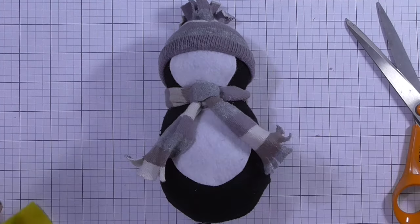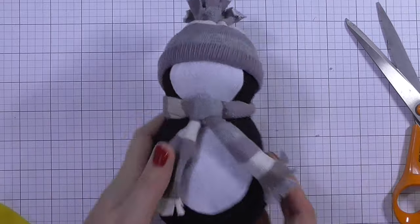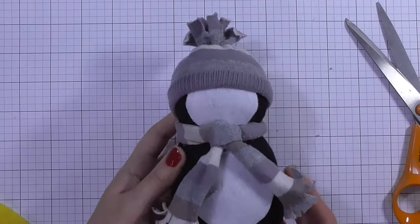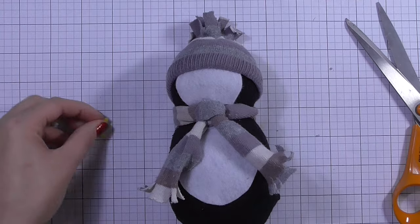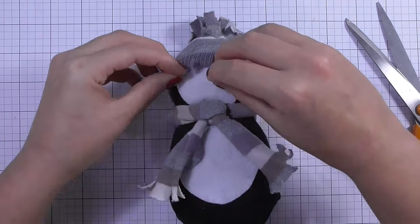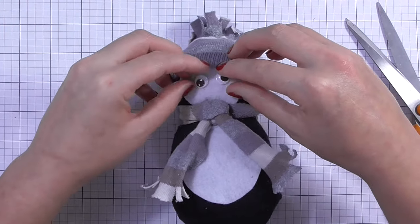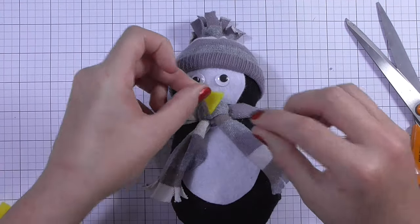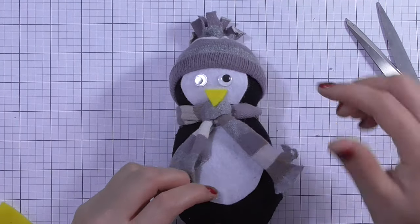I considered using buttons for this, but then I decided to cut out a triangle from some yellow felt. I really liked that as the penguin's beak, and I also decided to use some googly eyes for the penguin's eyes.